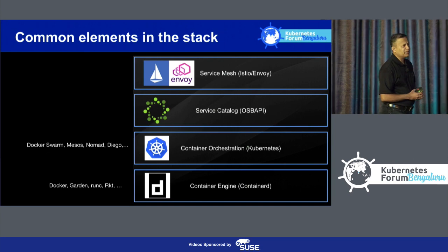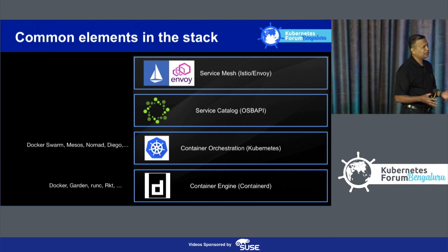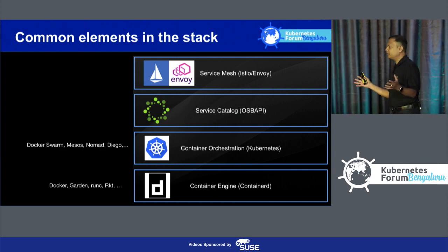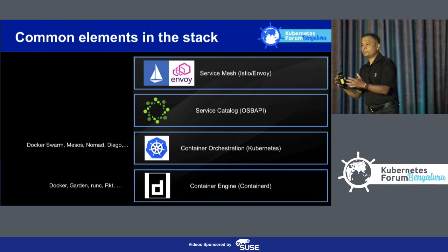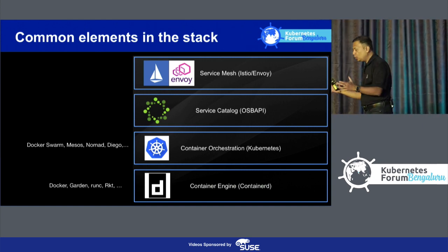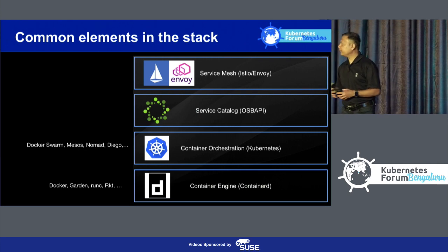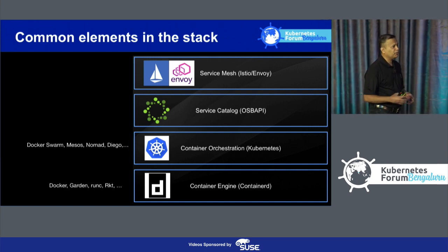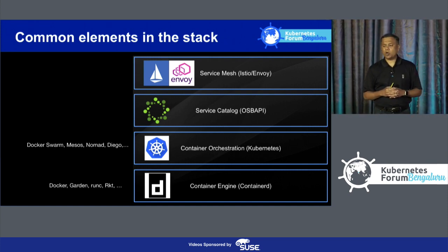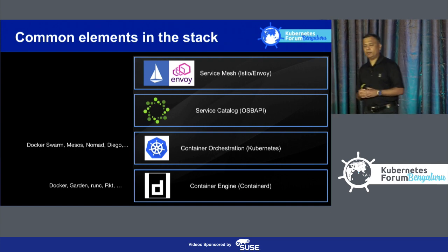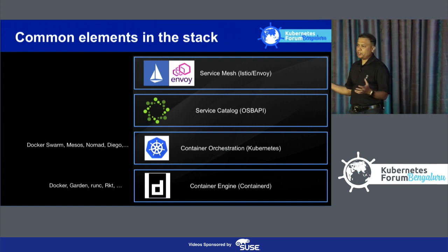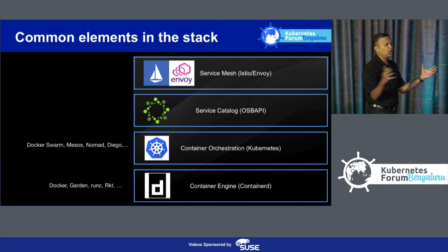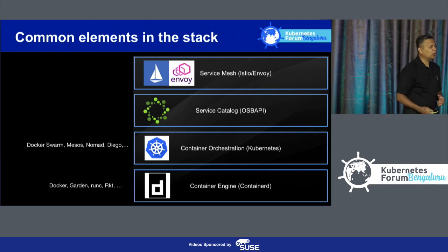The good news is over the period of the last three to four years, the community has come together. While there were many projects for doing many things, the community has come together to create some sort of opinionated stack. For example, we are more or less settled on container engine to be containerD, and we are settled on the orchestration layer based on Kubernetes. And then there are new projects like Service Mesh, Service Catalog, and Knative. We are converging on many of these projects coming together to create that opinionated stack.